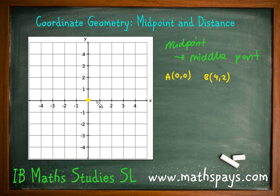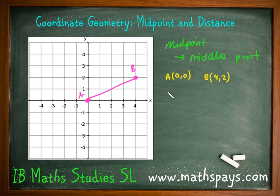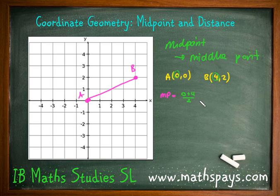Let's take two coordinates. I'm going to use 0, 0 and 4, 2. I'll plot my origin and coordinate 4, 2. The midpoint is the average point. How do you find the average of two numbers? You add them together and divide by 2. So to find the average x-coordinate, I add the two x-coordinates together — 0 and 4 — and divide by 2. Likewise, for the average y-coordinate, I add 0 and 2, then divide by 2.